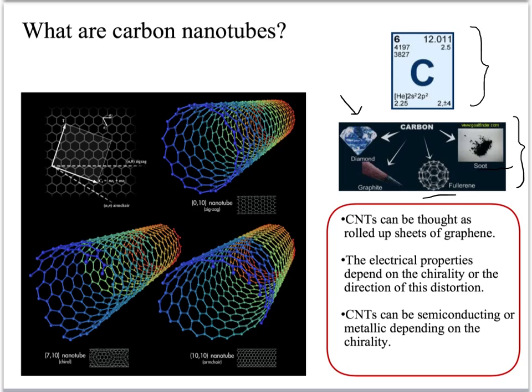If we define two basis vectors in the graphene sheet as A1 and A2, as I have shown here, then from a defined origin we can write a chiral vector to any other carbon atom in the graphene sheet. This chiral vector is going to be N·A1 plus M·A2.